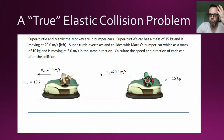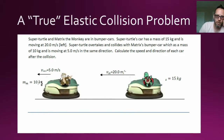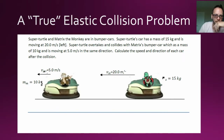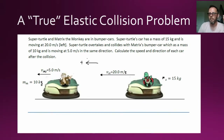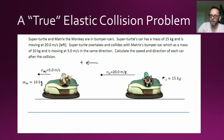The mass of Matrix the Monkey combined with his bumper cart is 10 kilograms, and the mass of Super Turtle is 15 kilograms. Initially, Matrix is moving to the left at 5 meters per second, and Super Turtle is moving in the same direction at 20 meters per second. Super Turtle is going to overtake Matrix and bump into him in a purely elastic collision. We want to know the speed and direction of each cart after the collision — two things to find.